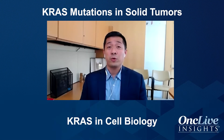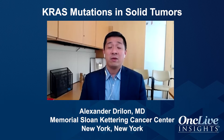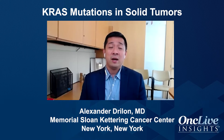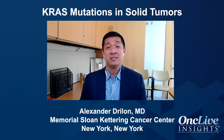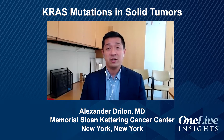RAS is an important proto-oncogene, and in fact there are three different types: KRAS, HRAS, and NRAS. For lung cancer in particular, we've known that KRAS hotspot mutations have existed since the late 1990s, and this was prior to the discovery of EGFR, ALK, RET, ROS, and others.